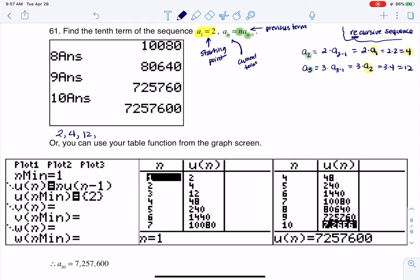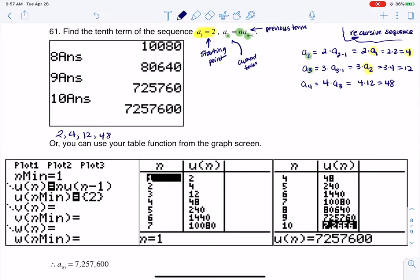Okay, and then I got to keep on going. So then I can go to a sub 4, which would be 4 times a sub 3, if we see the pattern. So this is going to be 4 times 12, which is 48. And then I can do a sub 5, which is 5 times the previous number. So this is going to be 5 times 48, which is 240.